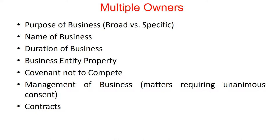Covenant not to compete: when multiple owners are in a business together, they owe a duty to each other not to compete with that business. But when the business ends or when one of the owners leaves, they are then free to compete. The business may want to create a covenant not to compete to protect the business and the owners who stay. As discussed under employment agreements, the covenant not to compete may prohibit solicitation of patients, prevent the person leaving from hiring employees away from the business, and may also prevent the person leaving from practicing chiropractic within a certain territory for a certain period of time.